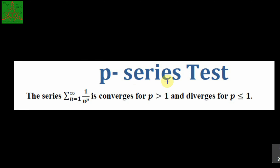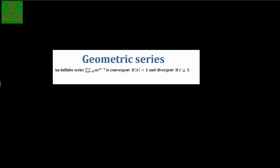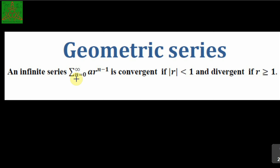The geometric series test states that a geometric series, summation of a·r^n, is convergent if |r| < 1 and divergent if |r| ≥ 1. Based on these four results — the comparison test, limit comparison test, p-series test, and geometric series test — we are going to solve certain examples.